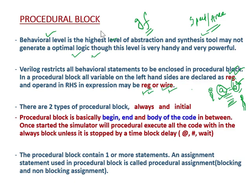There are two types of procedural block: one is always and another is initial. A procedural block basically consists of begin, end, and the body of the code in between. So it is like begin, then statements, then end. Whatever is written inside the begin and end is called the procedural block.